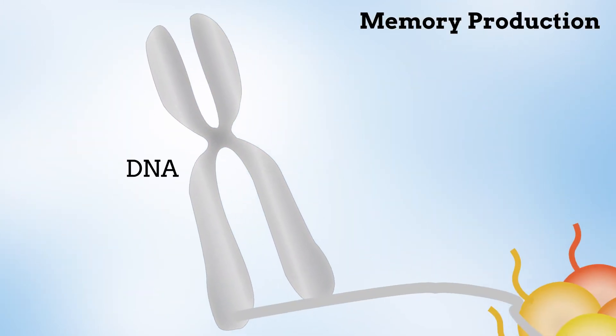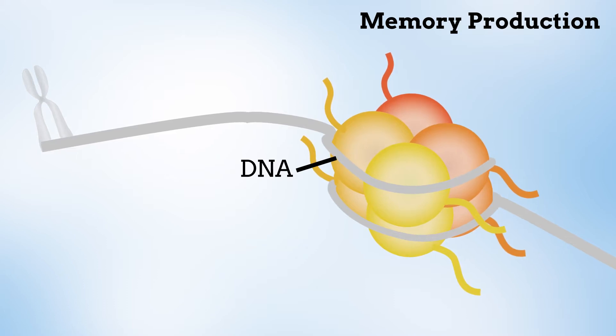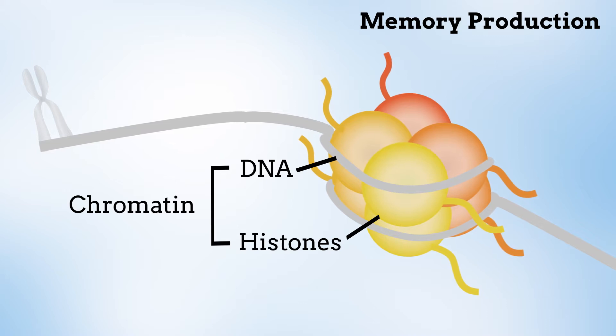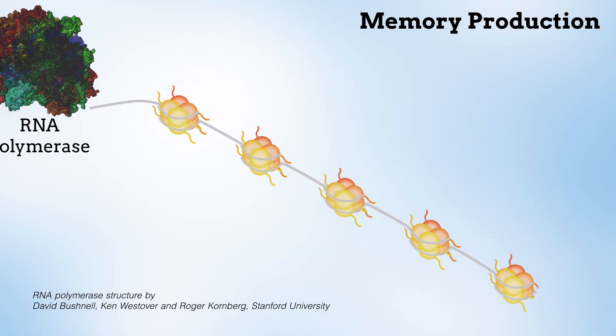Memory production involves the transcription of genes encoded by DNA, which is wrapped around a complex of proteins called histones to form chromatin. A DNA region that is wound around a histone complex is shielded from the gene transcription machinery.